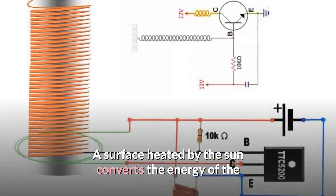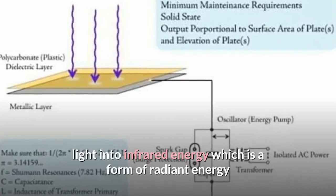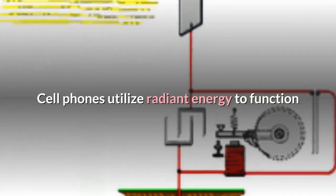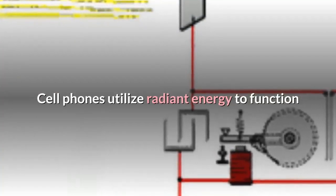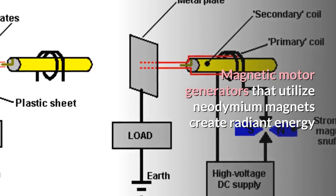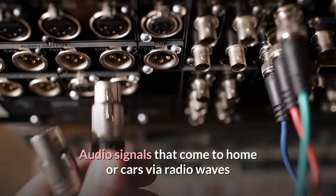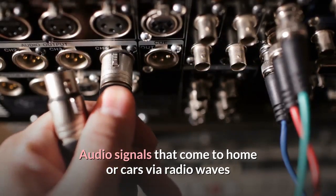A surface heated by the sun converts the energy of the light into infrared energy which is a form of radiant energy. Cell phones utilize radiant energy to function. Magnetic motor generators that utilize neodymium magnets create radiant energy. Audio signals that come to home or cars via radio waves.